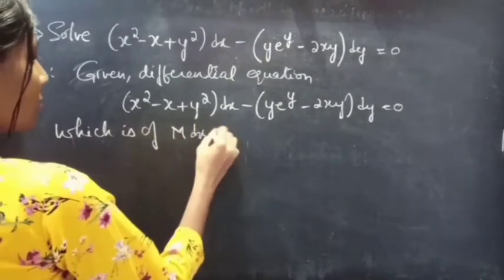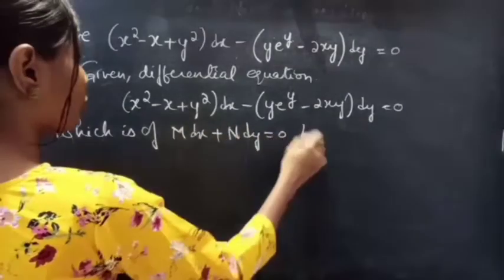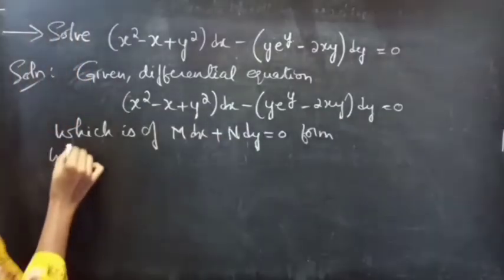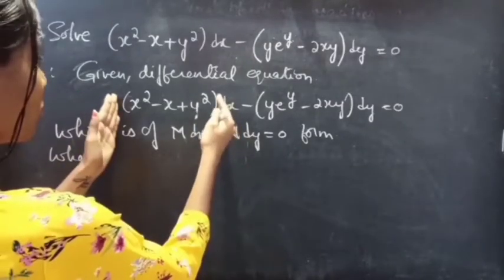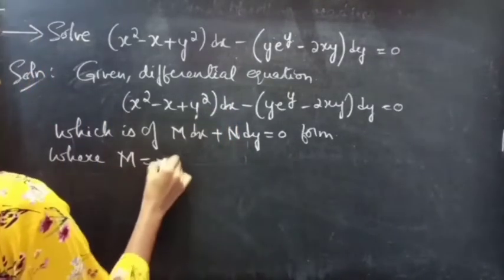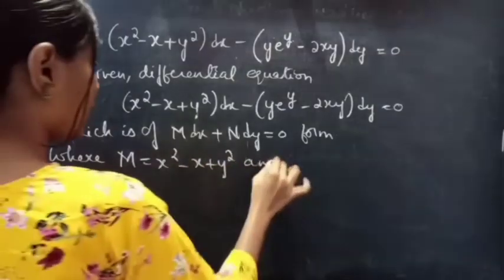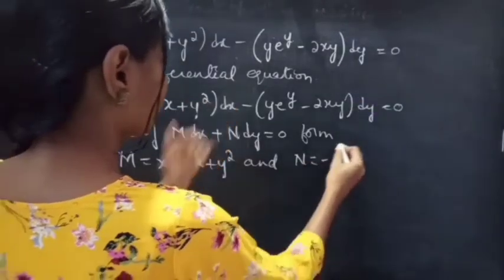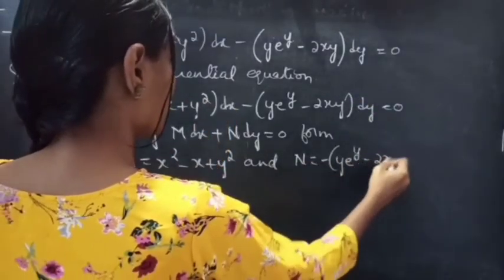The given differential equation is of the form M dx plus N dy equals 0. By comparing the two, we get M equals x squared minus x plus y squared, and N equals minus y e^y minus 2xy.